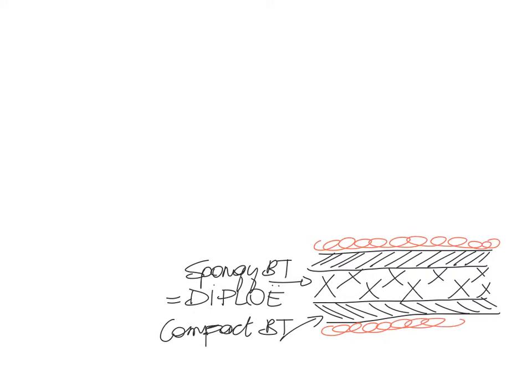The periosteum that surrounds any of our bones consists of two layers: the outer layer being a fibrous layer with lots of collagen fibers, and the inner layer consisting of many of our bone cells except for the osteocytes. So that's where we'd find the osteoblasts, the osteoclasts, but also the bone stem cells — the osteoprogenitor cells or osteogenic cells.